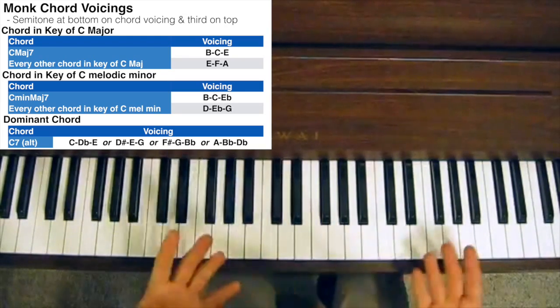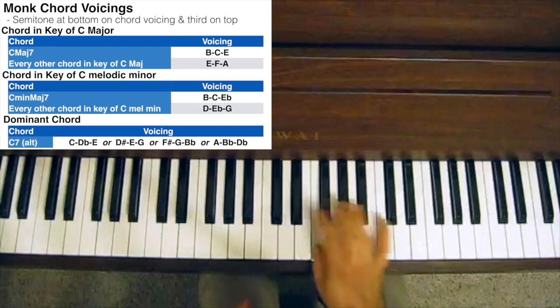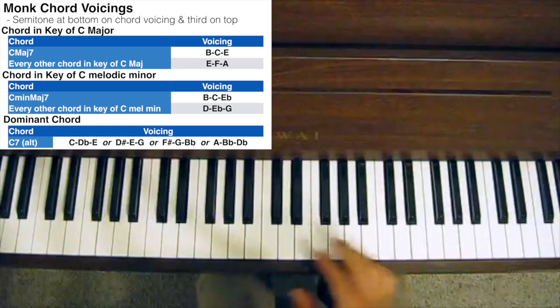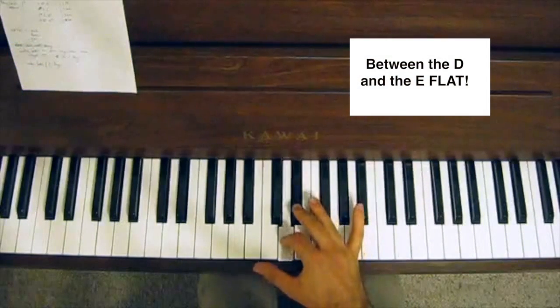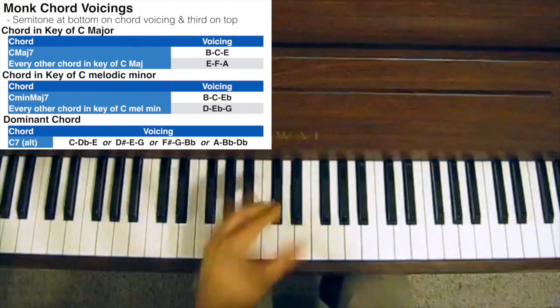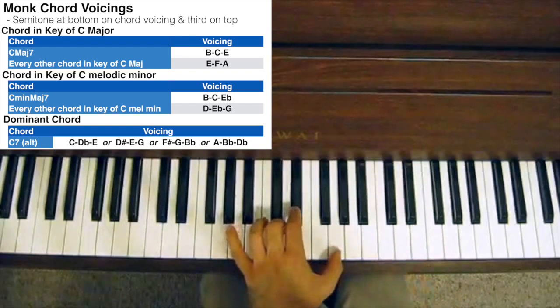You can work that out for other scales as well. For example, if you have the C melodic minor scale, there's a semitone interval between the B and the C and between the D and the E. So for a C minor chord, you'd play something like this. And for any other chord in the key of C melodic minor, you'd play this.